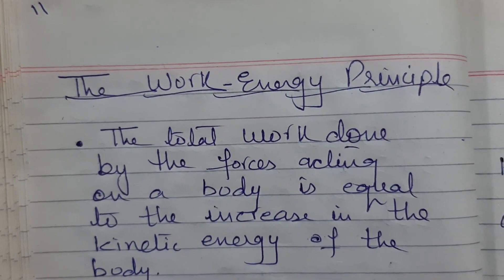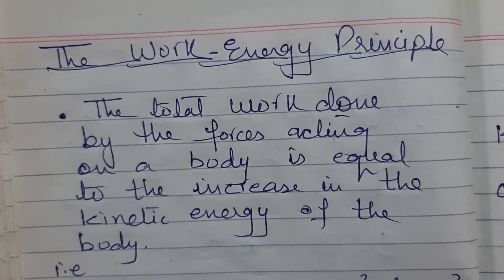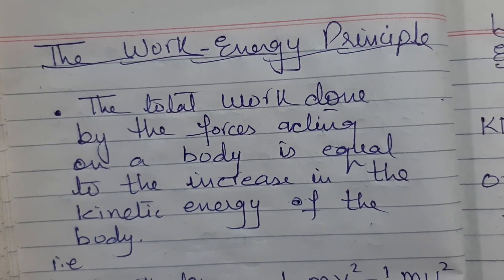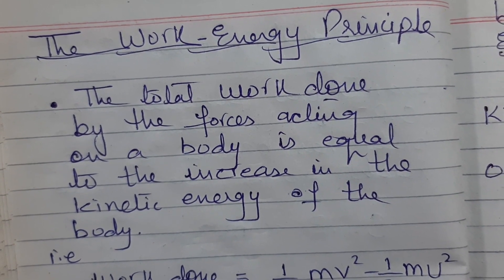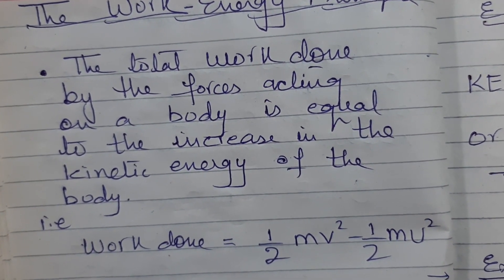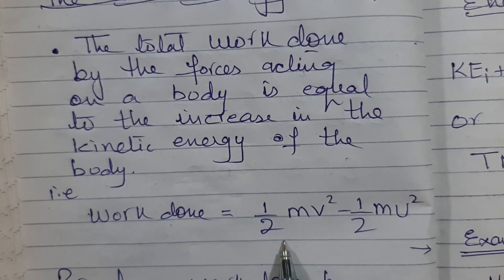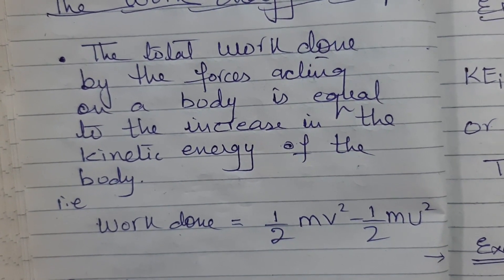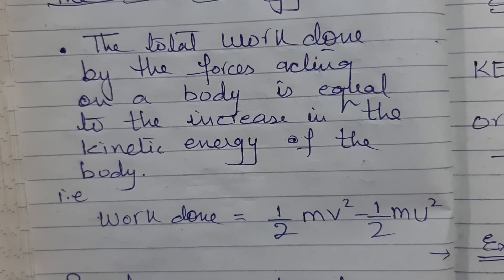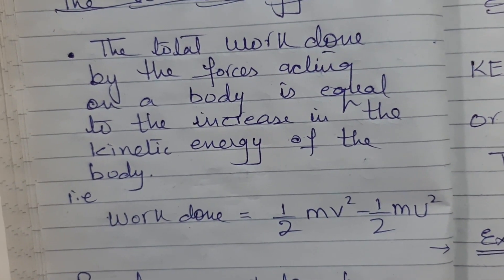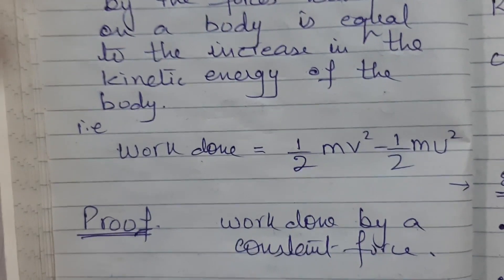Now the work-energy principle: the total work done by forces acting on a body equals the increase in kinetic energy of that body. In simple terms, to find total work done by forces on a body, just find how much the kinetic energy has changed. Let's look at how this formula is derived — it's not part of the syllabus but helps understanding.